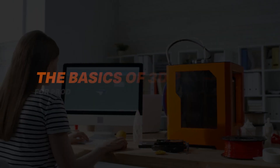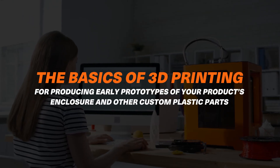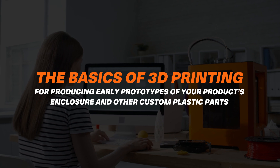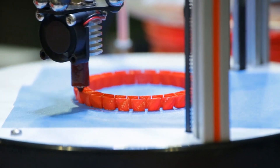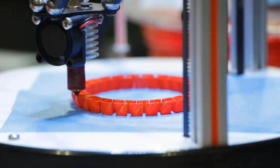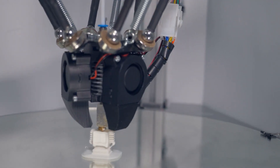In this video, you're going to learn the basics of 3D printing for producing early prototypes of your product's enclosure and any other custom plastic parts. We're going to discuss four different 3D printing technologies, including FDM, SLS, SLA, and jetting. We'll look at their advantages, disadvantages, and some use cases so that you can figure out which of these technologies is most appropriate for your specific prototype requirements.